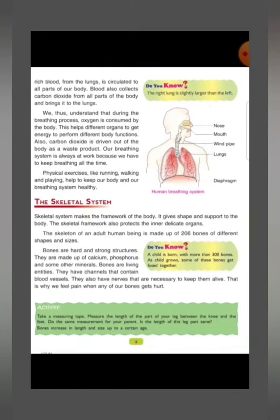The oxygen-rich blood from the lungs is circulated to all parts of our body. Blood also collects carbon dioxide from all parts of the body and brings it back to the lungs. So blood performs two tasks: it circulates oxygen-rich blood to all body parts, and collects carbon dioxide from all body parts to bring it back to the lungs.